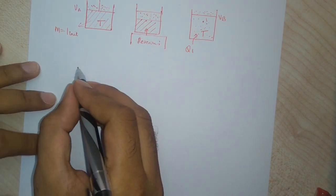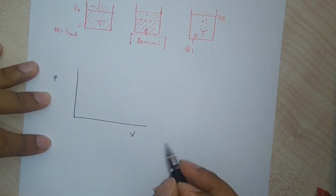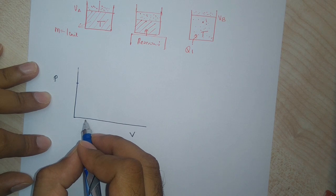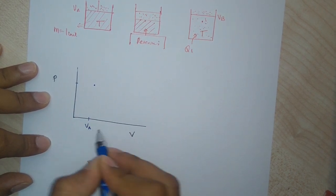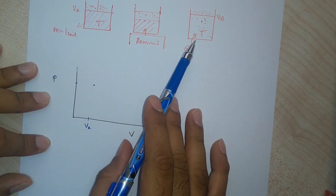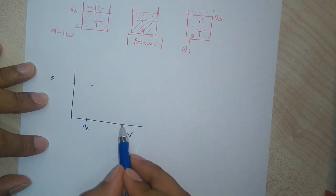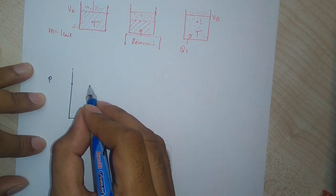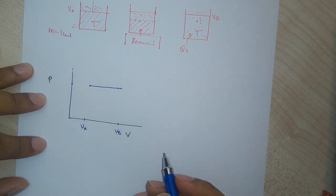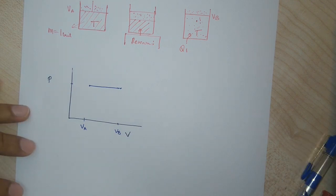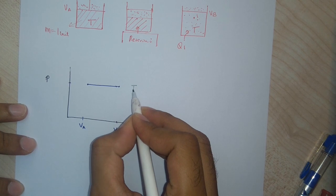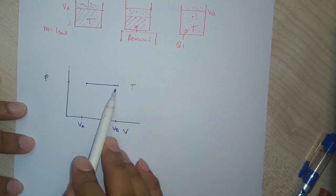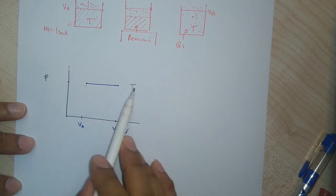If I plot this in the PV diagram, my gas which initially had pressure P and volume VA — from VA to VB the volume has increased while the pressure remained constant. So I have gone along a straight horizontal line from VA to VB keeping pressure constant. In this process the temperature T is also kept constant, so this is a type of isothermal process. I have gone from the liquid state at point A to the gaseous state at point B, with temperature remaining constant.